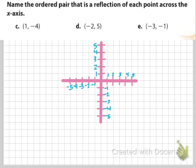The first point is 1 comma negative 4. So I go over 1 and down to negative 4 — this is my point in red. To get the reflection across the x-axis, I go to 1 and then up to positive 4. As you can see, if that were a mirror in the middle, those would be mirror images across the x-axis.